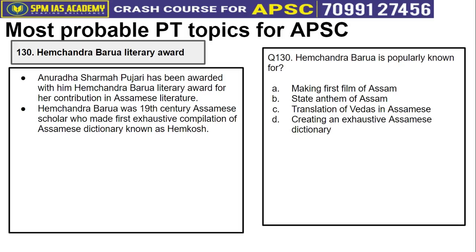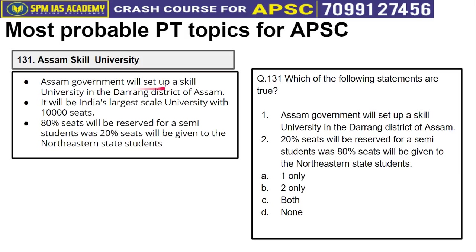Please attempt the question based on Topic No. 130. Topic No. 131 is about Assam Skill University. The Assam government will set up a skill university in the Darrang district of Assam. It will be India's largest skill university with 10,000 seats. 80% of the seats will be reserved for Assamese students, while 20% will be given to students from other northeastern states.